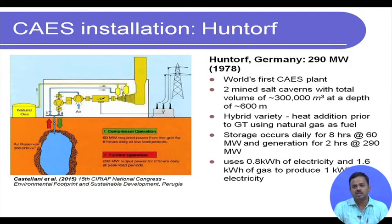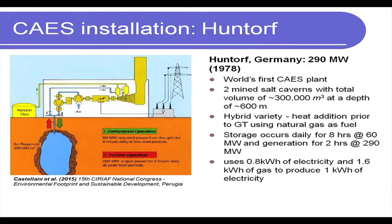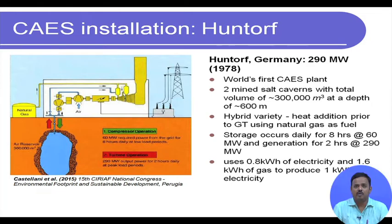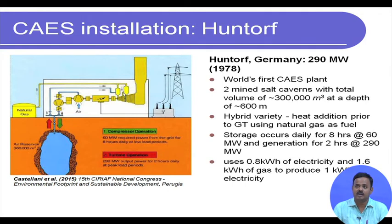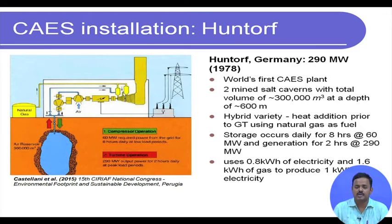The number of CAES installations across the world is few — not as widely implemented as pumped hydro — but there are some. The first was installed in Germany: the Huntorf installation in 1978, the world's first compressed air energy storage plant. It used two mined salt caverns with an overall volume of around 300,000 cubic meters.